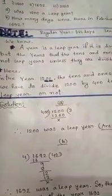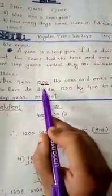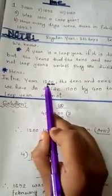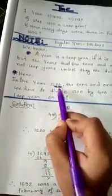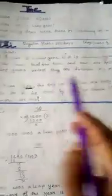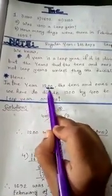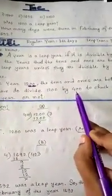Because the years where the tens and ones place are both 0, we have to divide the year by 400, not just by 4, to check if it is a leap year or not.